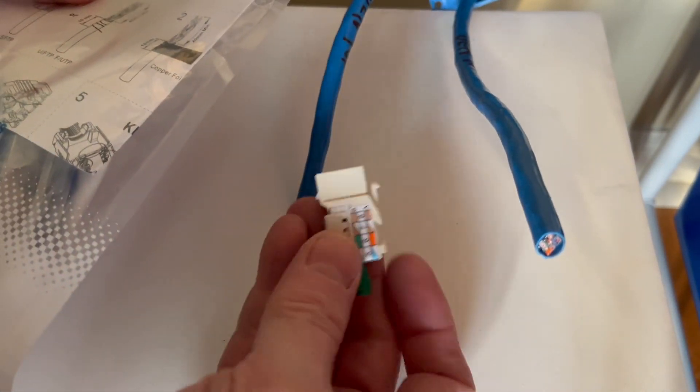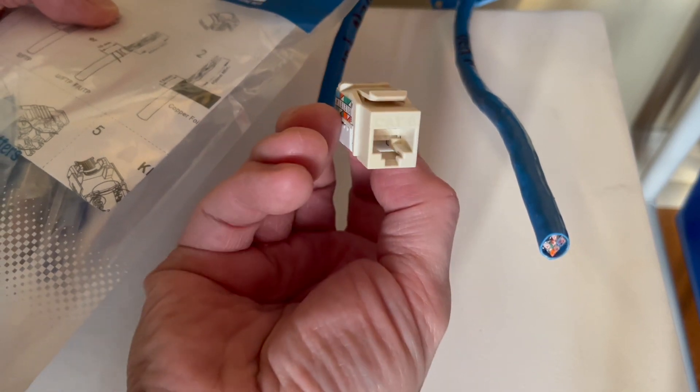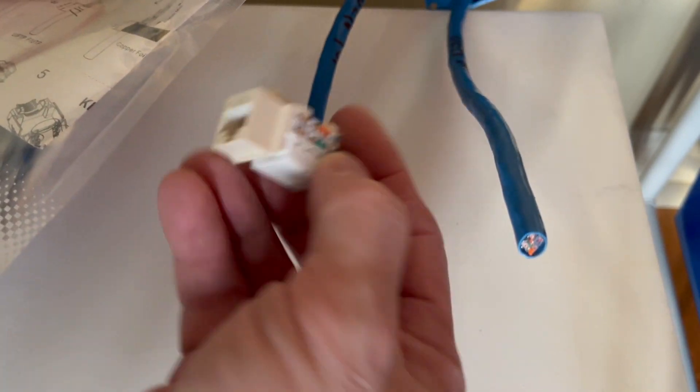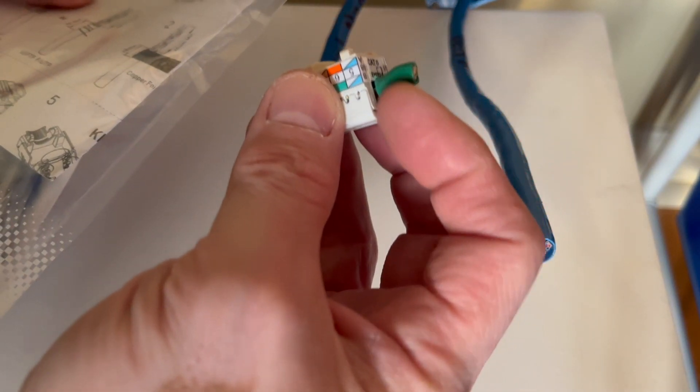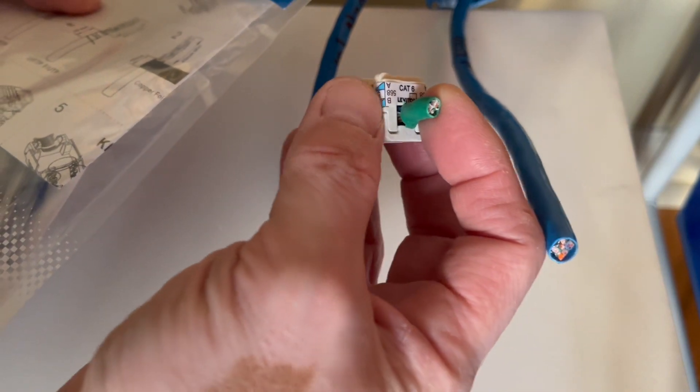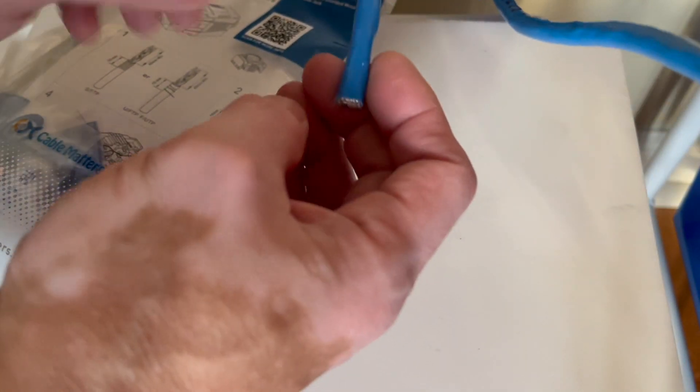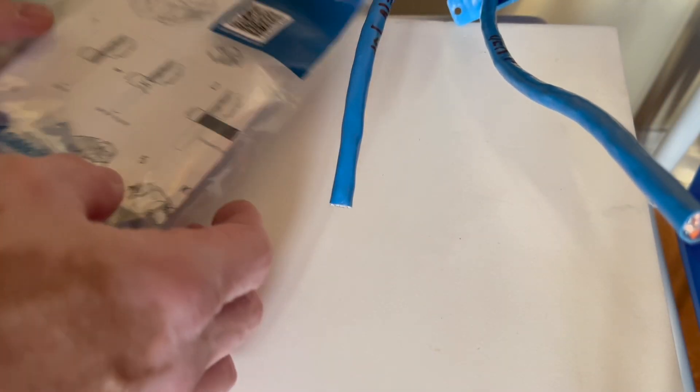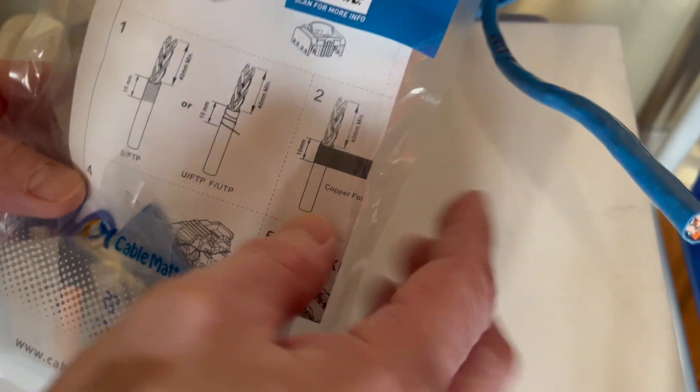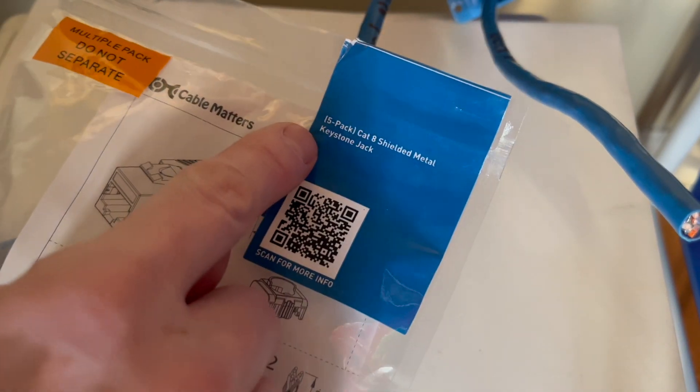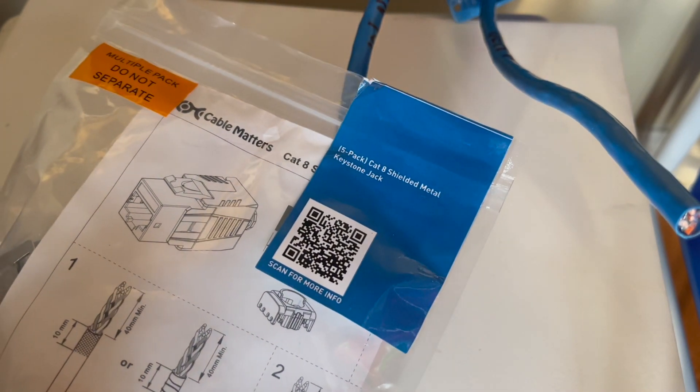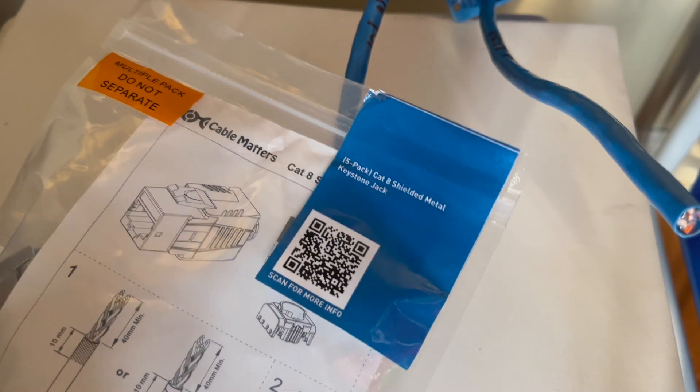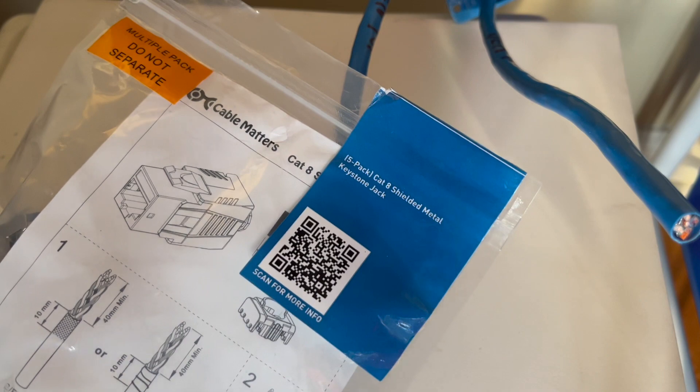I am upgrading my ethernet cable and port from Cat 6 to Cat 8. This is 23 gauge AWG and this is 22, and I'm using the keystone port. This is a five pack; they come in one or five packs.